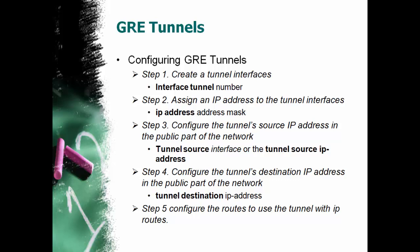I've got a topology here that we'll use as an example. The next step is to configure a destination IP address in the public part. The command is 'tunnel destination' and then the IP address. For this command you must use an IP address — you cannot use an interface designation. This is going to be the IP address of the distant end of the tunnel. Then you've got to configure the route to use the tunnel with the 'ip route' command, using a static route.